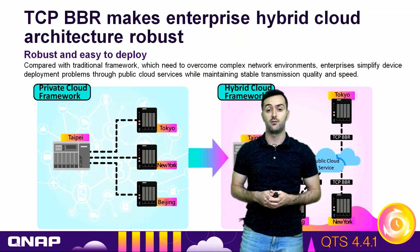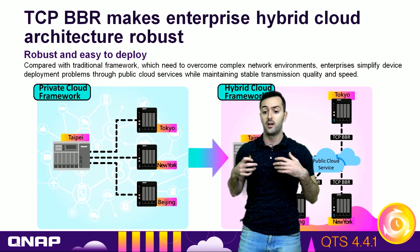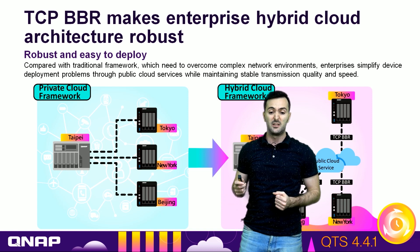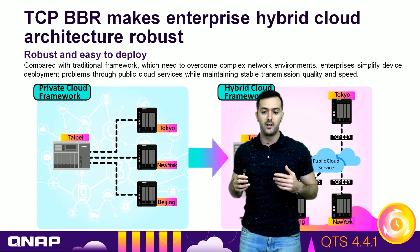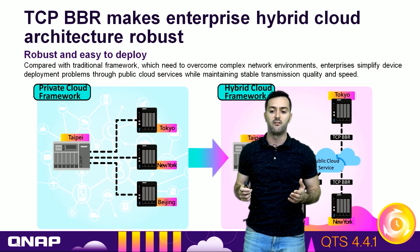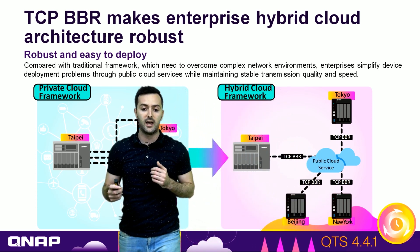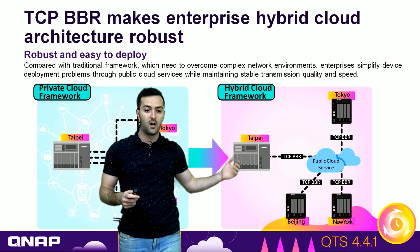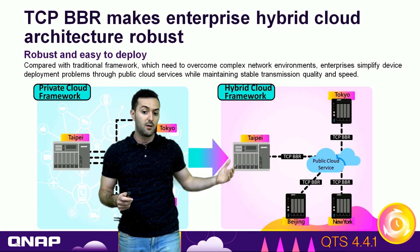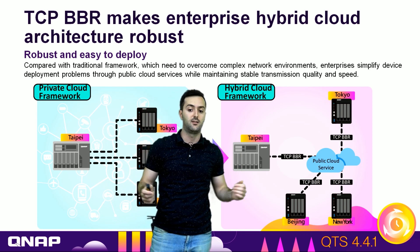TCP BBR makes enterprise hybrid cloud architecture very robust. Traditional private cloud frameworks tend to face complex network environments, but with a hybrid cloud framework we have public cloud services and can enable TCP BBR for faster and more stable internet transmission, improving both quality and speed.